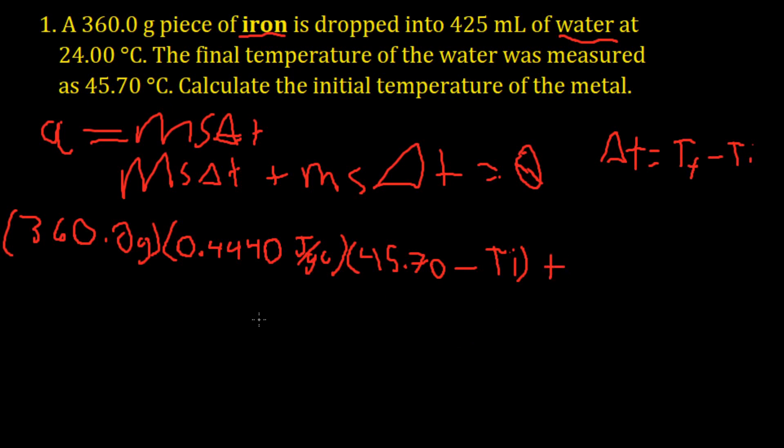So then you would add that to the ms delta t for water, which would be the mass 425 grams, because the density of water is 1 gram per every milliliter. So 425 grams times the specific heat of water, which I was forced to memorize, 4.184 joules over grams Celsius. And then 45.70 is the final temperature. And the final temperatures are the same for both because they need to reach an equilibrium. And the water was originally at 24.00 degrees Celsius.